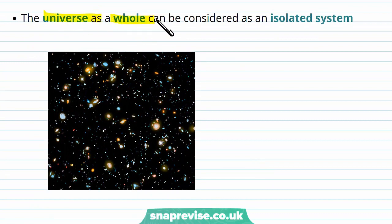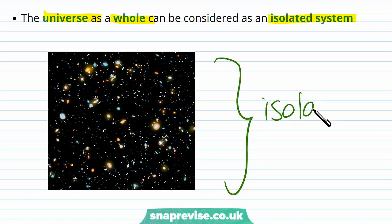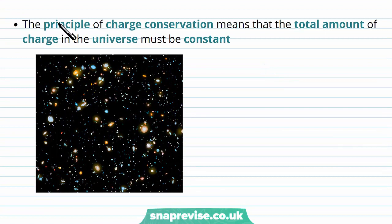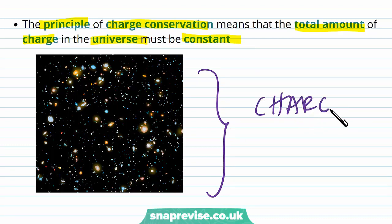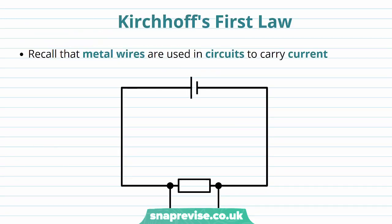The universe as a whole can be considered as an isolated system, because as far as we know, we only know our universe to exist — there's nowhere else for the charge in our universe to be transferred to. So the principle of charge conservation means the total amount of charge in the universe must be constant. Now that we understand the principle of charge conservation, we can apply this by looking at Kirchhoff's first law.